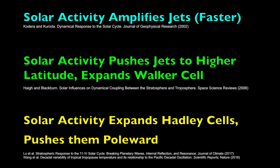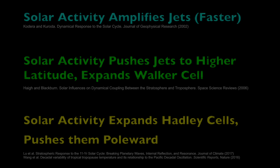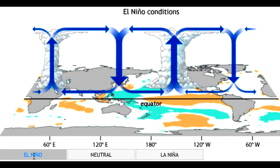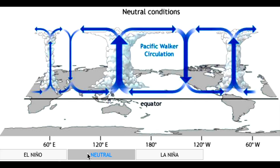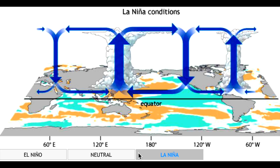The second point notes that high solar activity also pushes the jets towards the poles, while expanding the Walker cells. The Walker circulation is an equatorial beltway which involves El Niño and La Niña, which are also shown to be heavily influenced by solar activity. The expansion of these Walker equatorial cells due to solar heating is really one of the keys to all of this jet and vortex forcing.